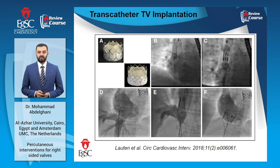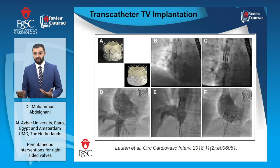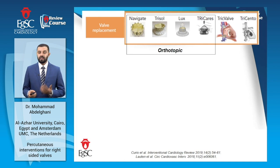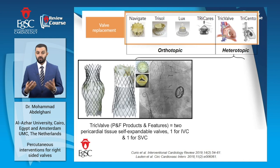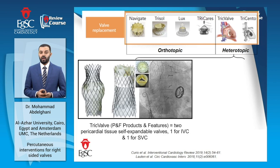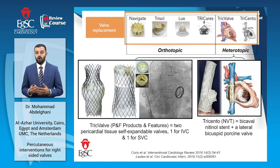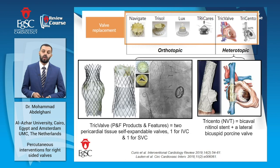Transcatheter tricuspid valve implantation started with off-label use of transcatheter aortic valves implanted into the vena cava to reduce systemic venous congestion from extreme tricuspid regurgitation. Today, multiple options exist and can be broadly classified into orthotopic and heterotopic transcatheter tricuspid valve implantation. Heterotopic options include the TRICENTO, consisting of two pericardial tissue self-expandable valves — one for the inferior and one for the superior vena cava. The TRICENTO is another option, consisting of a bicaval nitinol stent and a lateral bicuspid prosine valve which provides inflow into the right atrium.